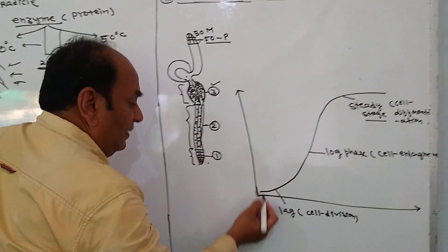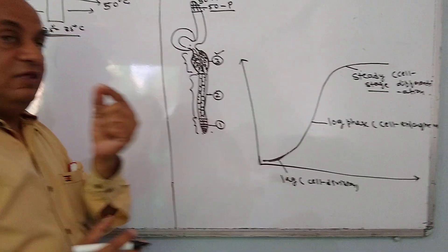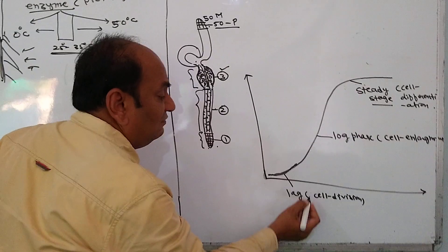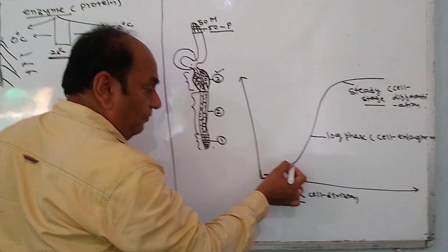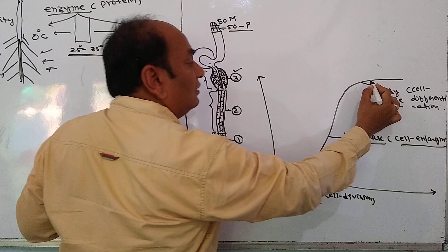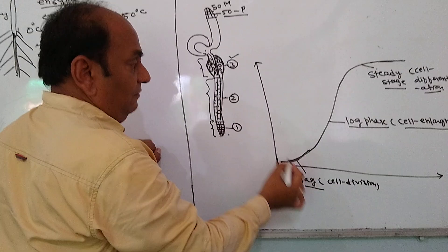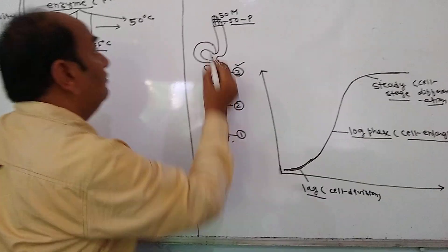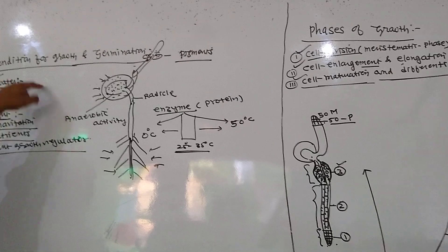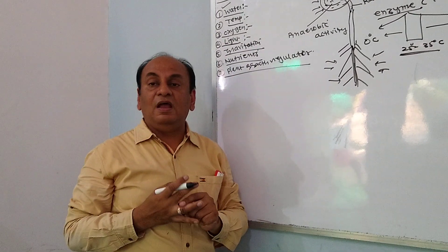If you plot growth over time, initially growth is very slow — that is the lag phase, where number of cells is increasing. Then growth speeds up as already-formed cells increase in size — that is the log phase. When no new cells are added and cells perform fixed functions, that is the steady state or cell differentiation phase. So the three phases are cell division, cell enlargement, and cell maturation. Next lecture we will see how growth is measurable and which parameters we use to measure growth.